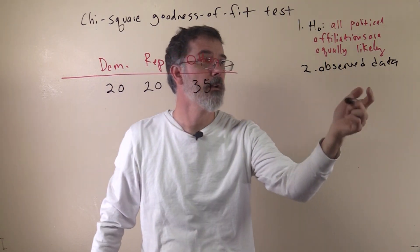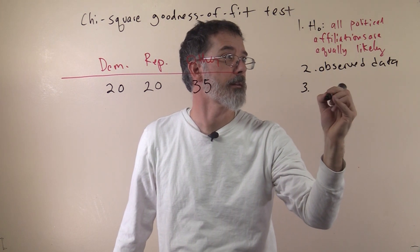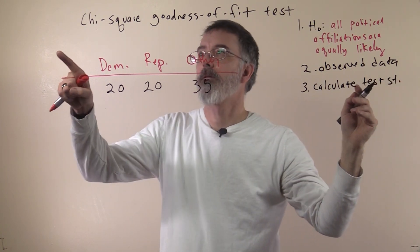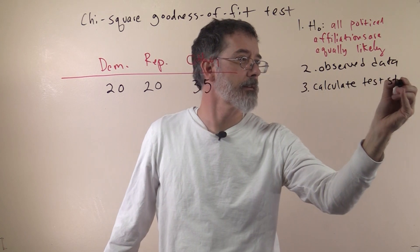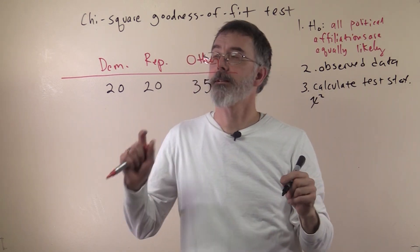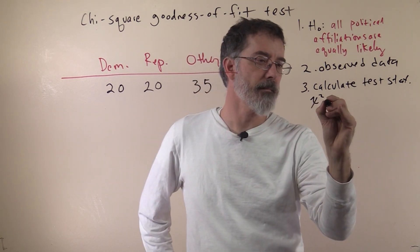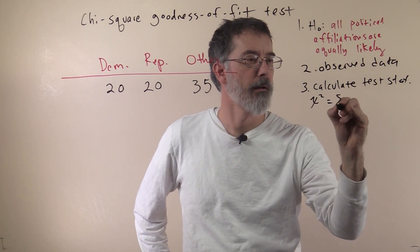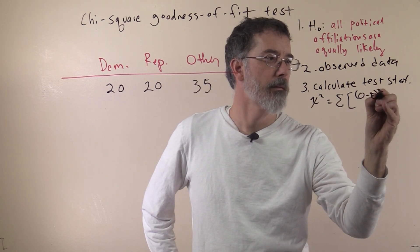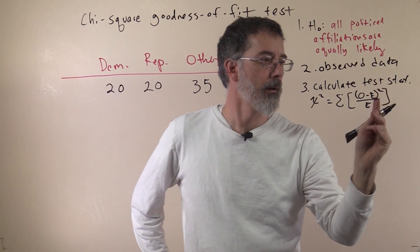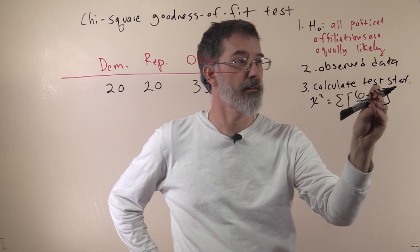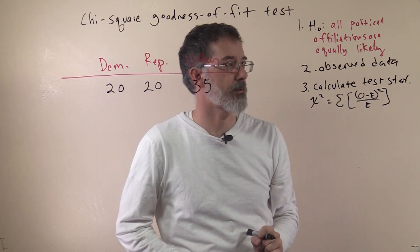Next we will calculate our test statistic. For the chi-square goodness of fit test, the test statistic is a chi-square, and it has the exact same formula as it did for the chi-square test for independence. Our chi-square test statistic is the sum of our observed minus expected squared divided by expected. For all three different observed values, we will determine their expected values, plug those in, and add across all of them — that will be our chi-square value.